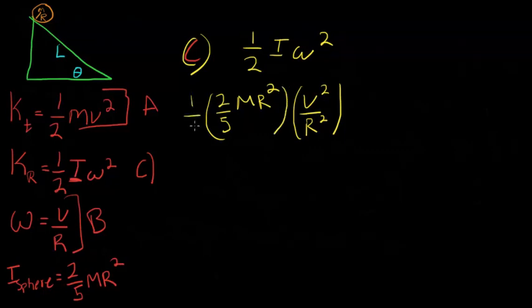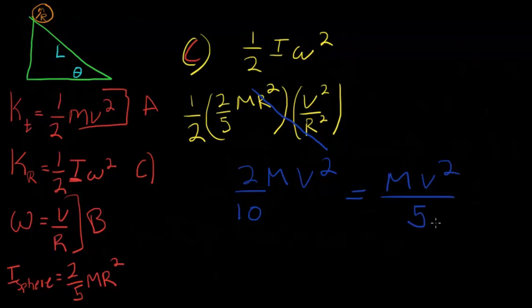So, I'm going to do 2 over 5 M R squared and then put that there and then I got a little one half out in front. All right, well, you can probably see right away, well, we can go ahead and cancel this out and then we're going to go ahead and just multiply that together. So, we're going to get 2 over 10 M V squared. Now, you know, just simplifying that, we're going to get M V squared over 5. Boom. That's the answer to C.